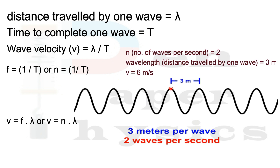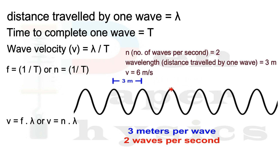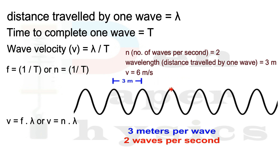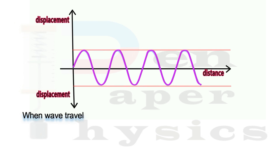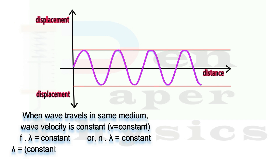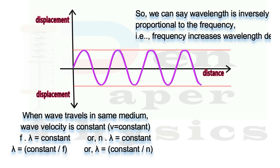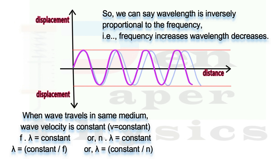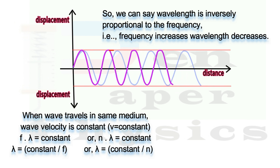In this example, it is clearly evident that there are two waves per second and each wave is traveling 3 meters. When a wave travels in the same medium, its wave velocity is constant. That means the product of f and lambda is also constant, so lambda equals constant divided by f. Therefore, wavelength is inversely proportional to frequency.